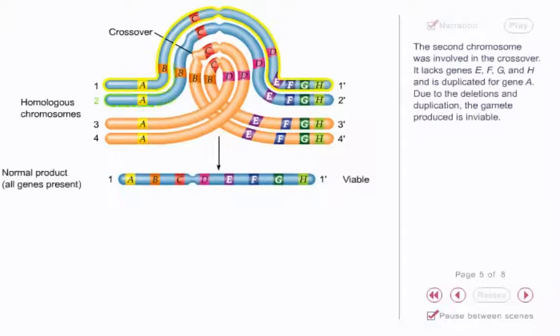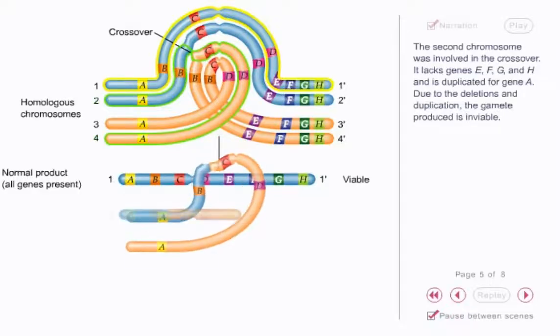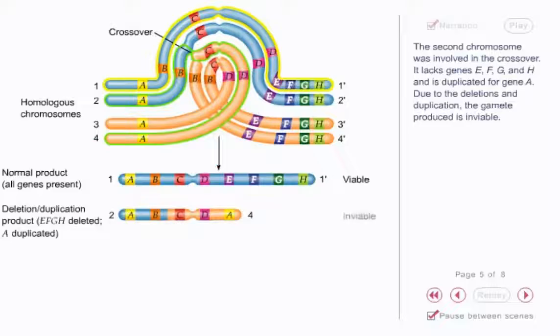The second chromosome was involved in the crossover. It lacks genes E, F, G, and H, and is duplicated for gene A. Due to the deletions and duplication, the gamete produced is inviable.